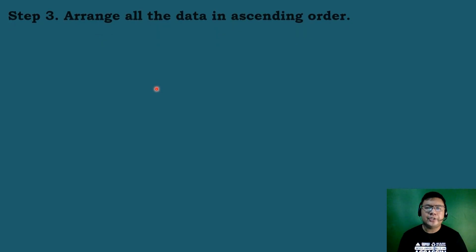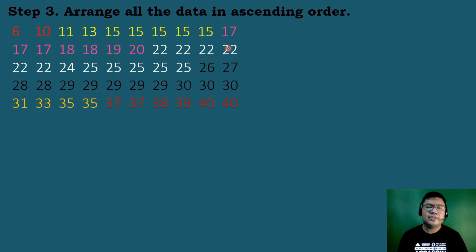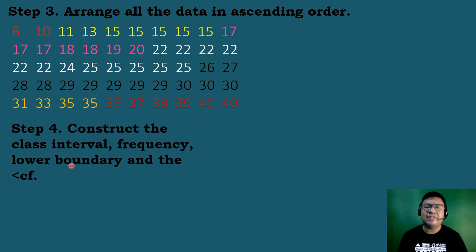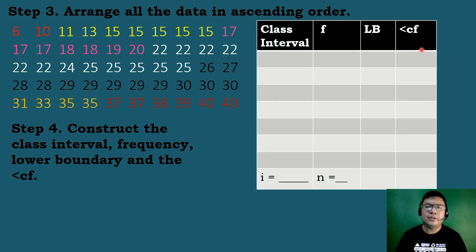The next step is to arrange the data in ascending order, from the lowest scores up to the highest scores. After arranging, we will now construct the class interval, frequency, lower boundary, and the less than cumulative frequency. The class width i is equal to 5, as computed earlier.